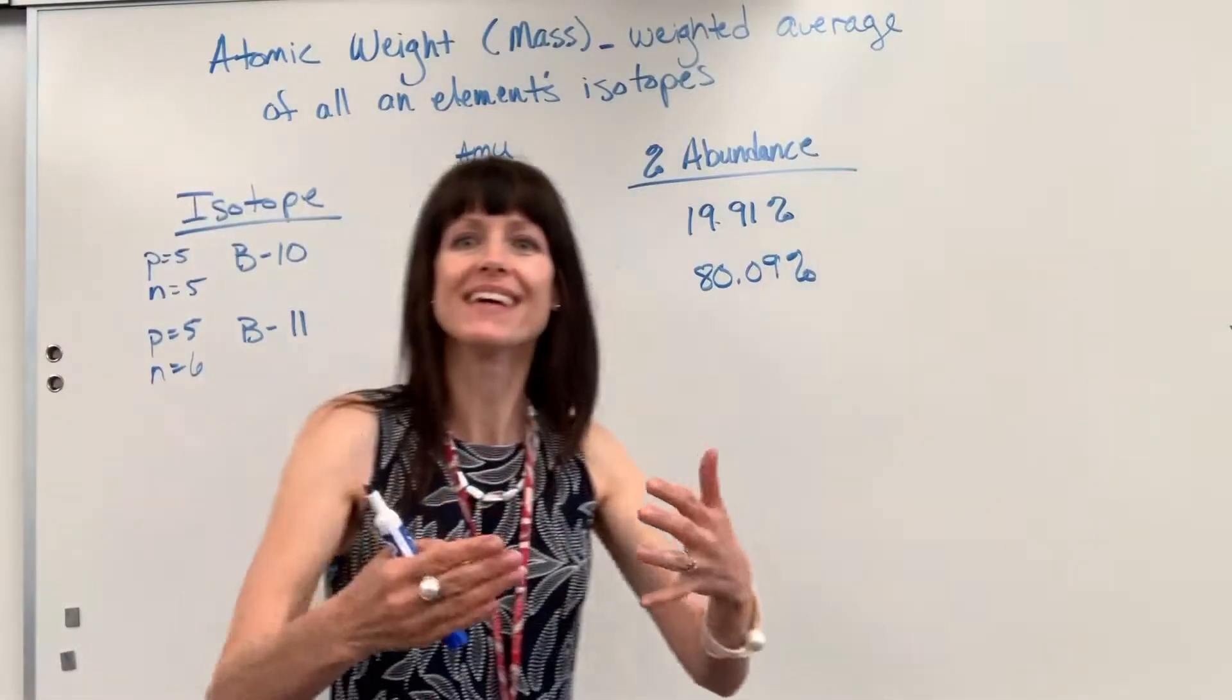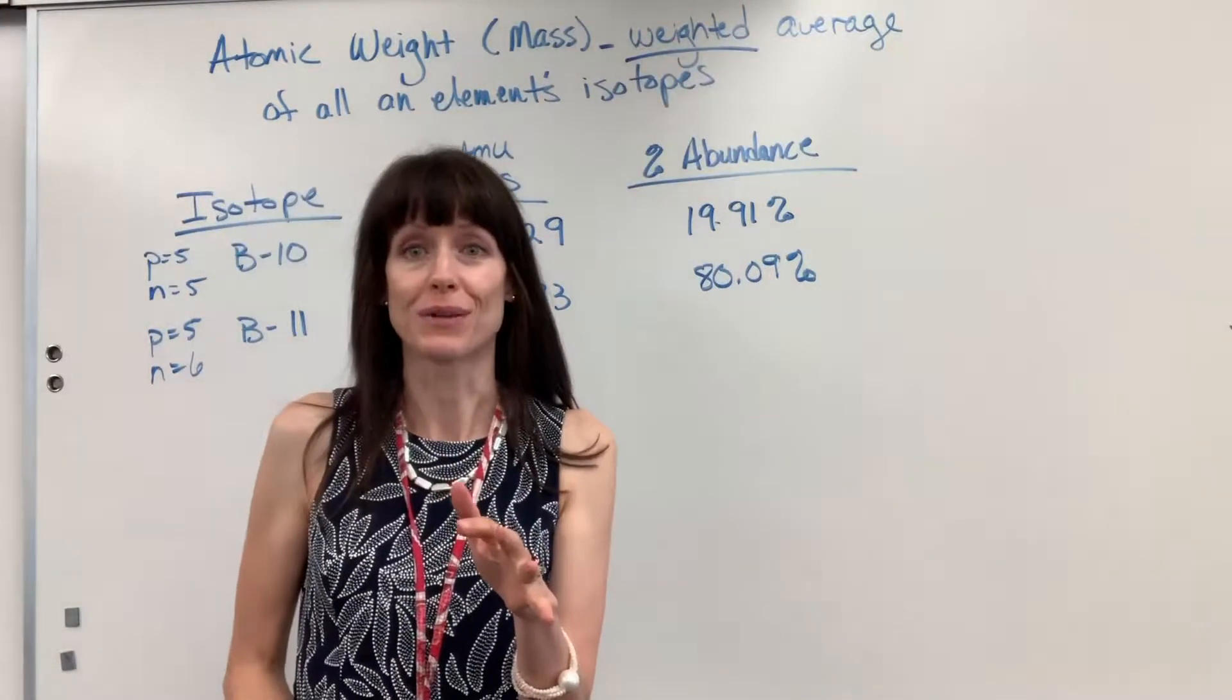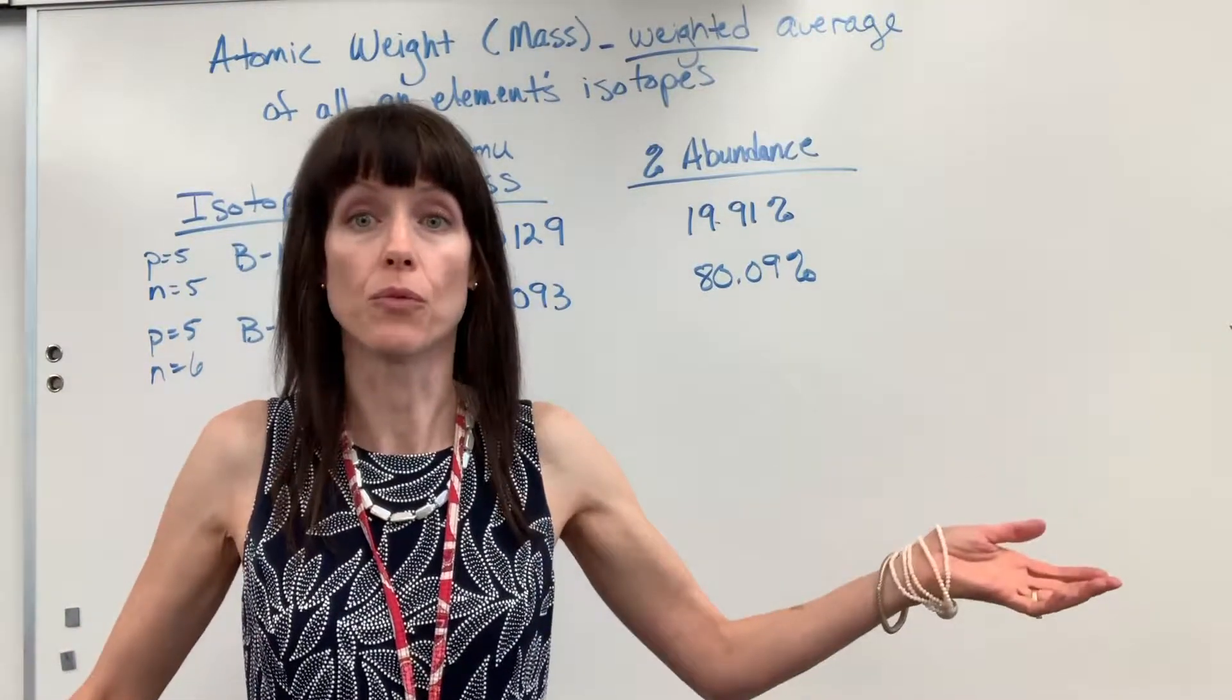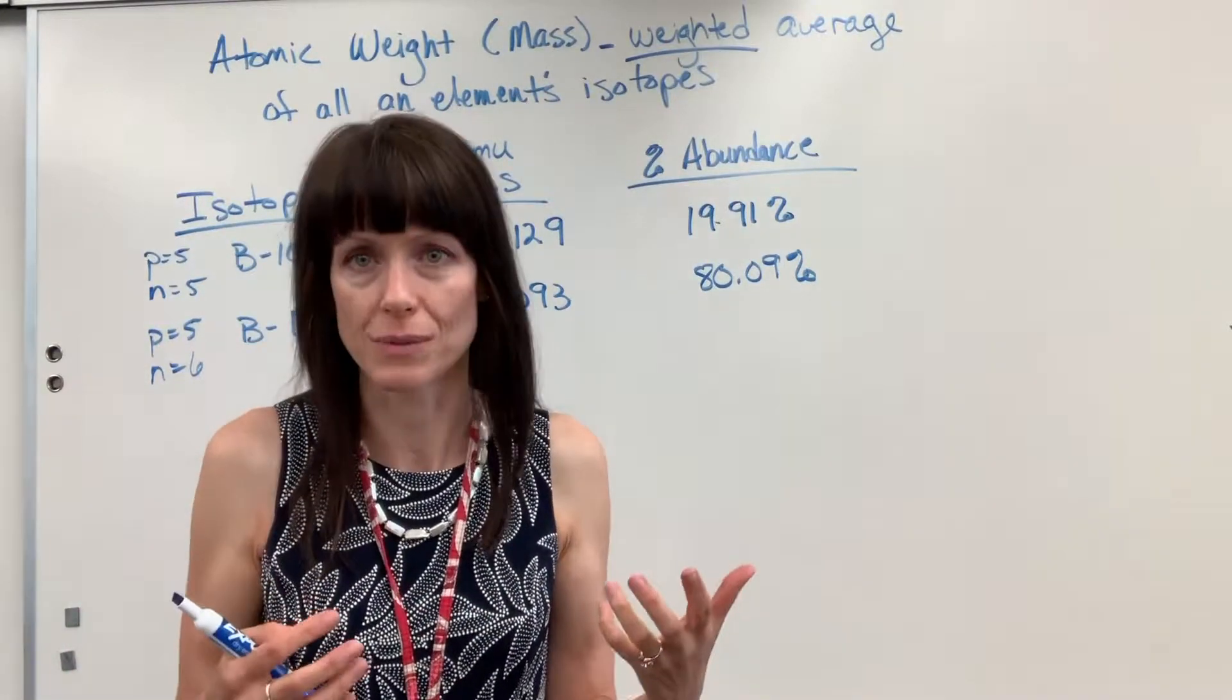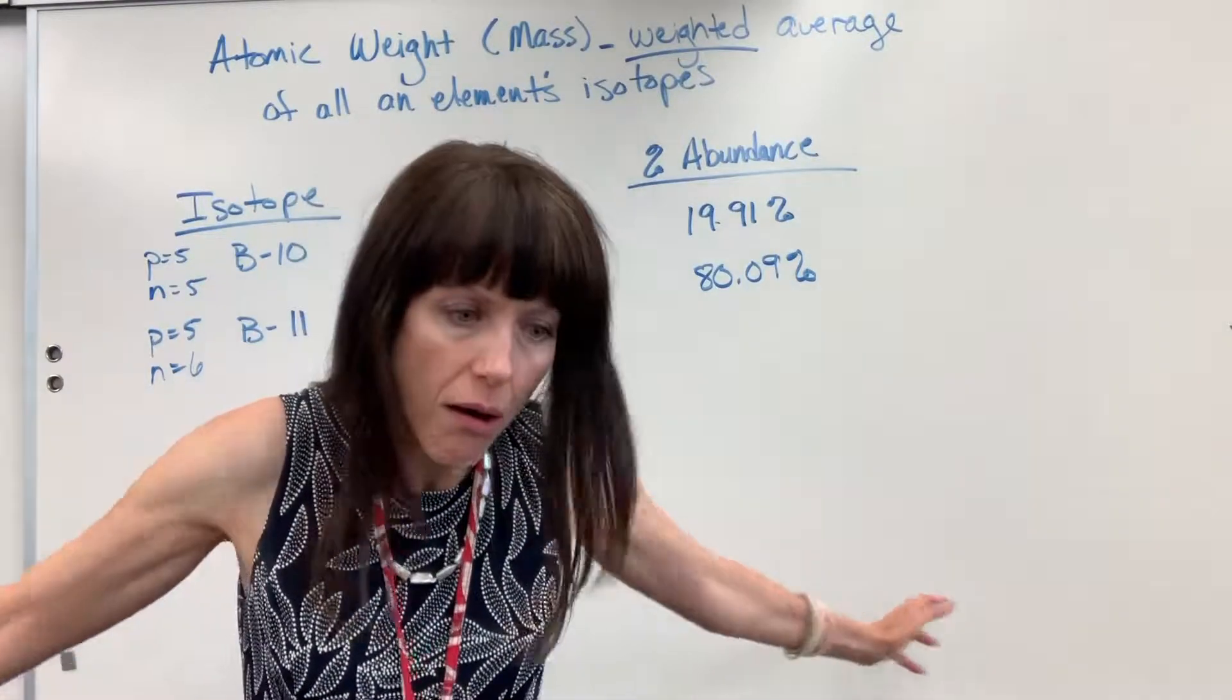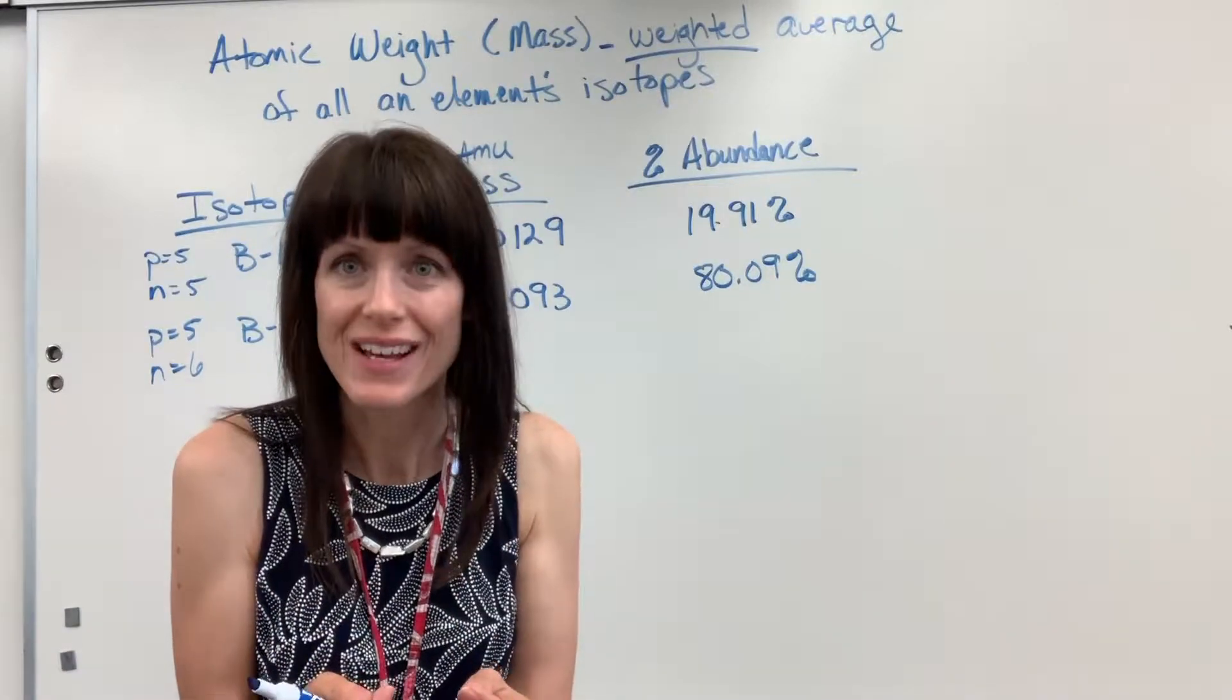So how do we get that number on the periodic table, that weighted average? I want to stress one word here: weighted. You're totally familiar with weighted averages. Think about grades. For example, I may say that in my class, 10% is going to be graded on assignments, 60% is going to be tests, and 30% is going to be labs. So I take all my students' lab scores at the end of the term and multiply that by 30%. I take all of my students' test scores and multiply that by 60%. Take all their assignment scores, multiply that by 10%, add it together, and there's the grade. There's a weighted average.